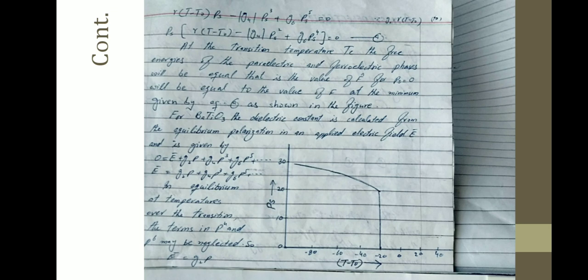Transitions in which the control parameter changes continuously are known as second order transitions, while those in which the control parameter changes discontinuously are known as first order transitions.